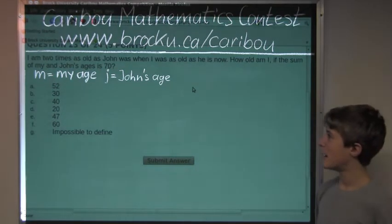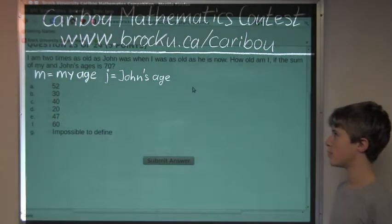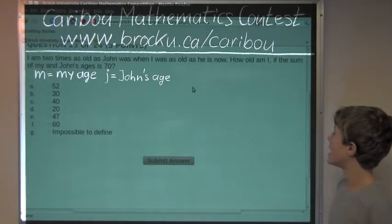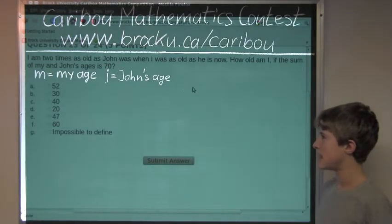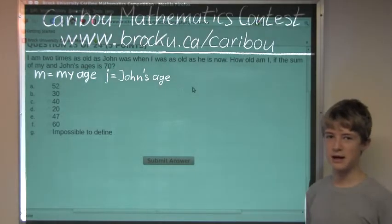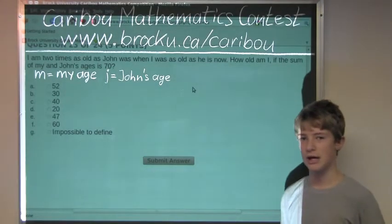The question is: I'm two times as old as John was when I was as old as he is now. How old am I if the sum of my and John's ages is 70? That is easy because it's just m plus j equals 70.